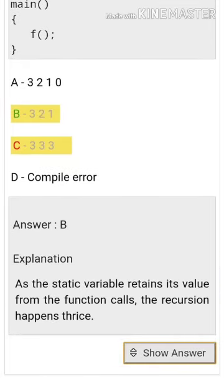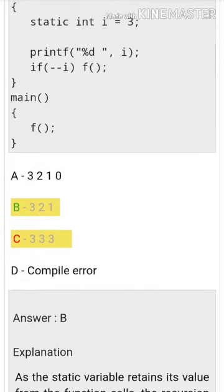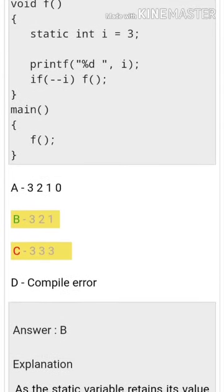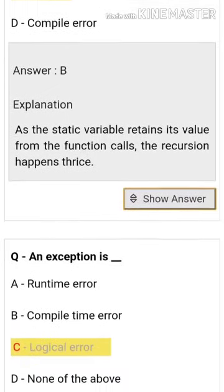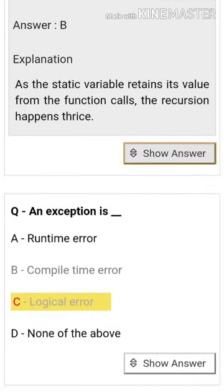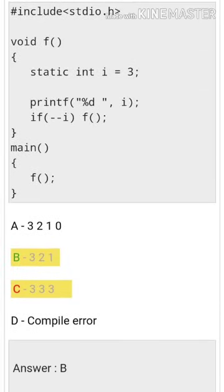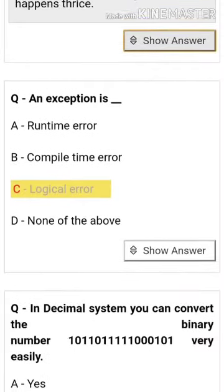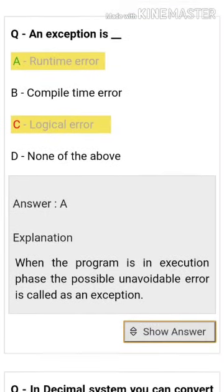As the static variable retains its value from function calls, the recursion happens thrice. The answer is an exception is a runtime error. When the program is in execution phase, the possible unavoidable error is called an exception.